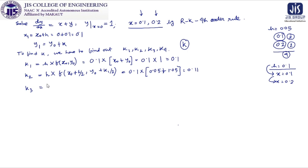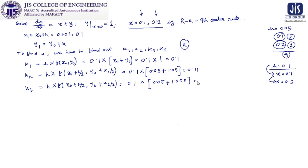Next, K3 = H · F(X0 + H/2, Y0 + K2/2) = 0.1 · F(0.05, 1 + 0.055) = 0.1 · F(0.05, 1.055). Adding these: 0.05 + 1.055 = 1.105, and multiplying by 0.1 gives K3 = 0.1105.